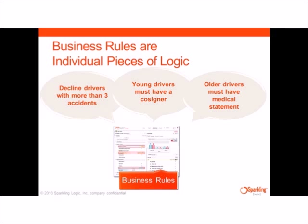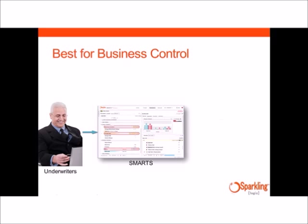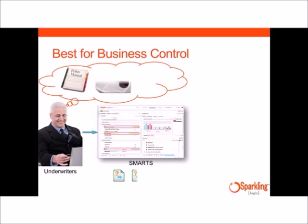Anna's policy has been approved, as she did not trigger any of the red flags. She has had less than three accidents and she's neither young nor old. Business rules are best for business control, as business users — in this case underwriters — can capture the decision logic to be automated. They can tap into their own expertise to augment the policies codified in the policy manuals, regulations, or corporate strategy.